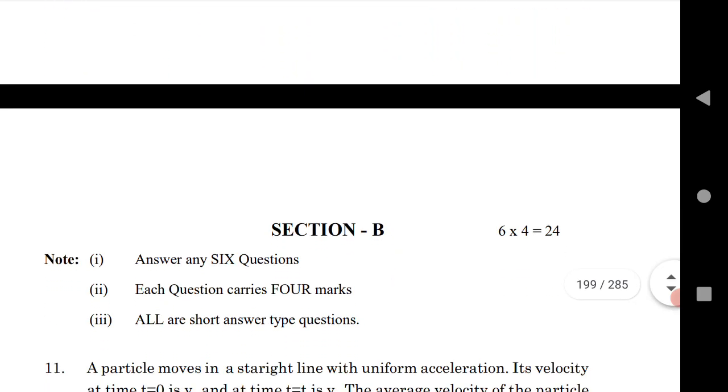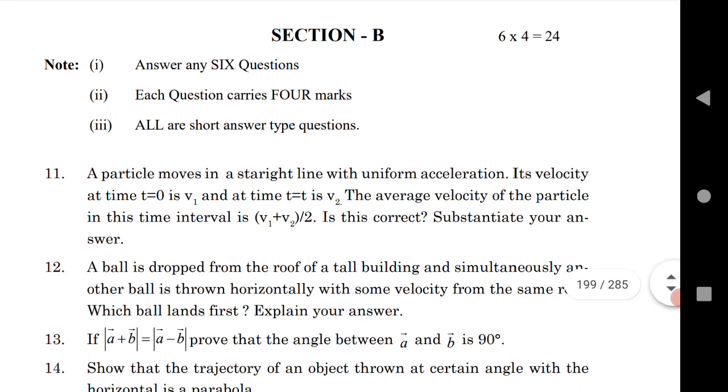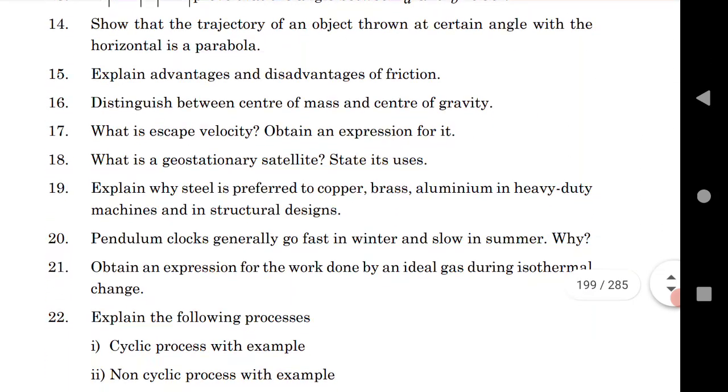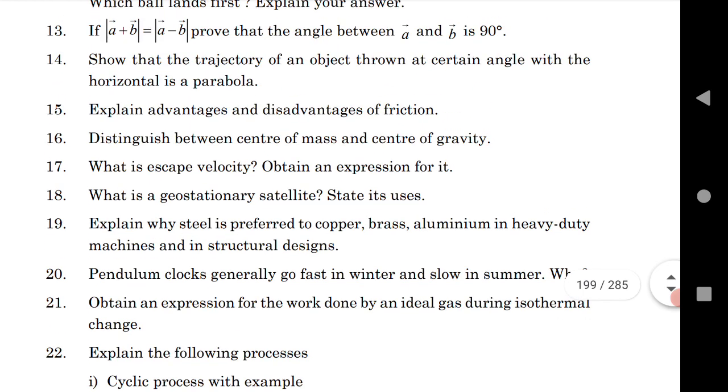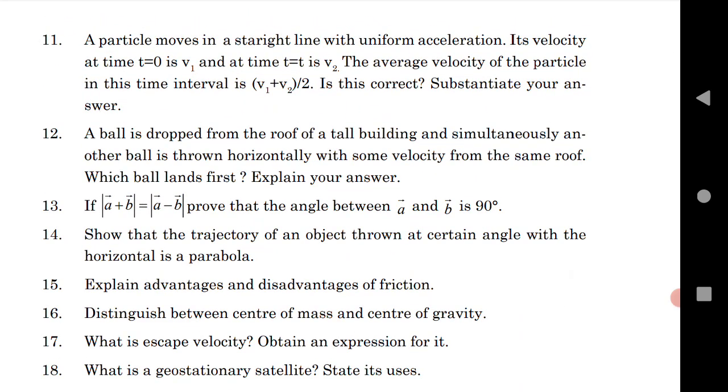Next section, that is Section B. This year there are changes in Section B. This is good news for inter first year students—you are getting extra options this year because four more options have been added in your paper. 50% more options you are getting.